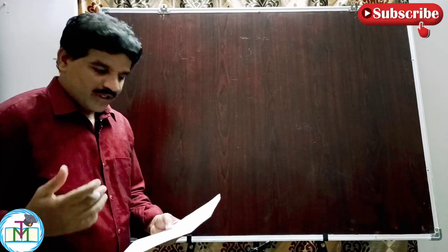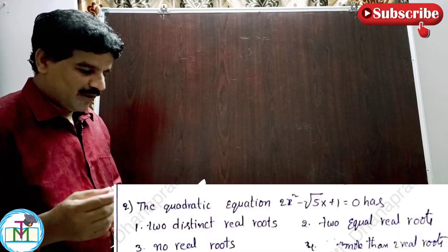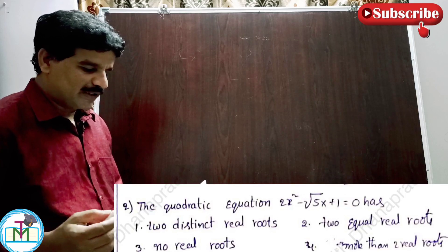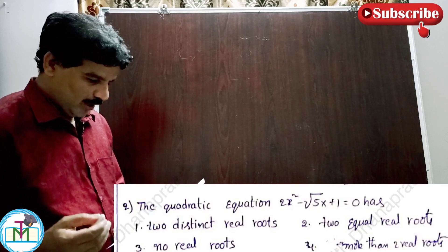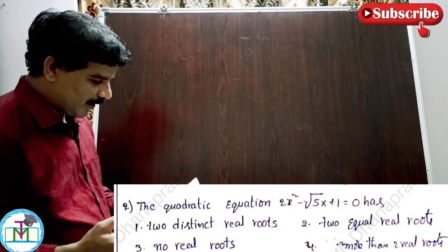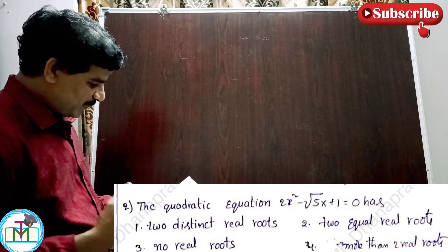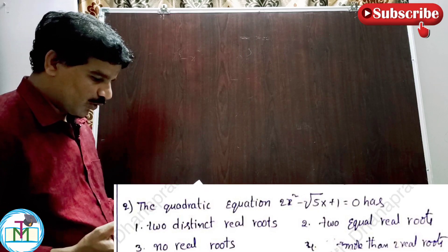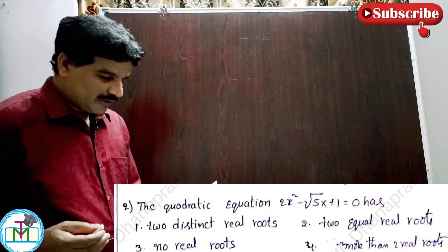Question number 2: The quadratic equation 2x² - √5·x + 1 = 0 has — option 1: two distinct real roots; option 2: roots are real and equal; option 3: no real roots; option 4: more than two real roots.